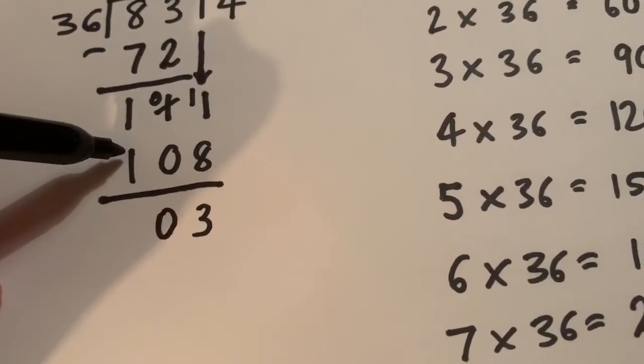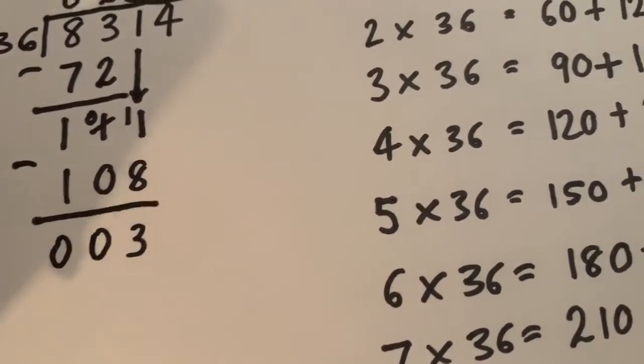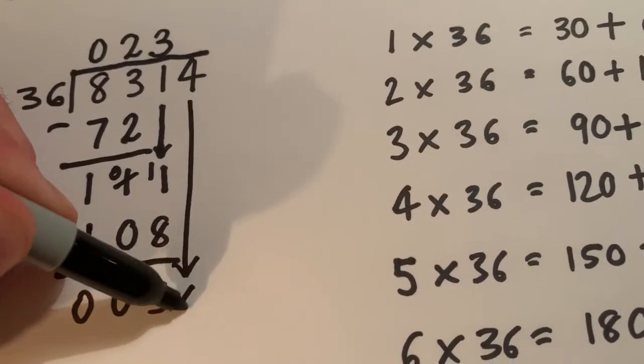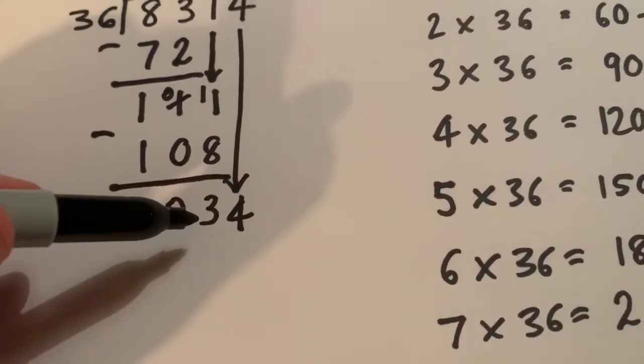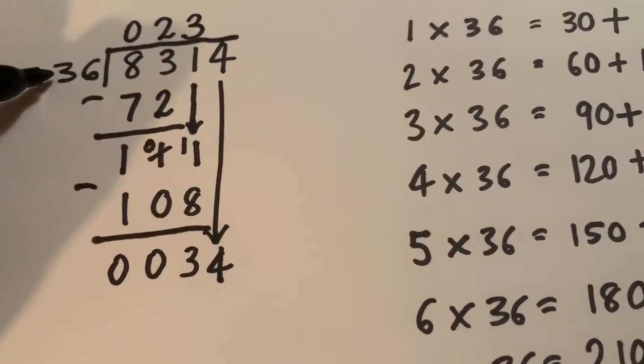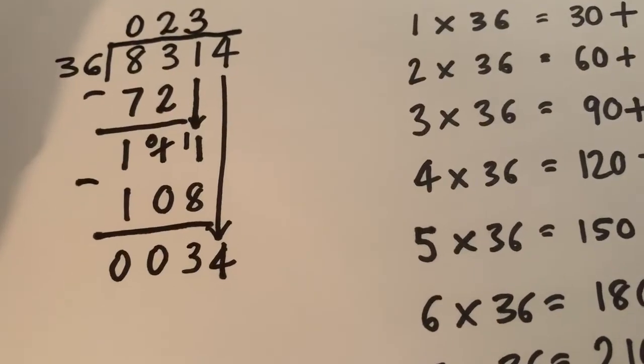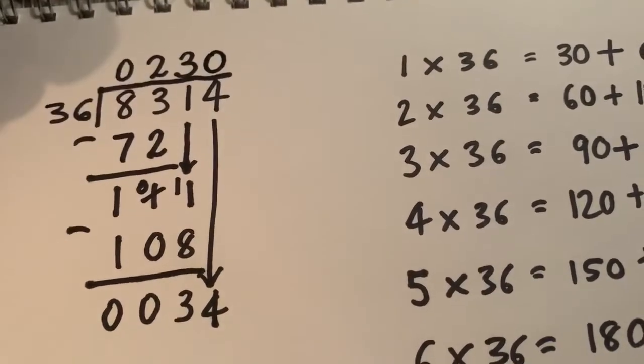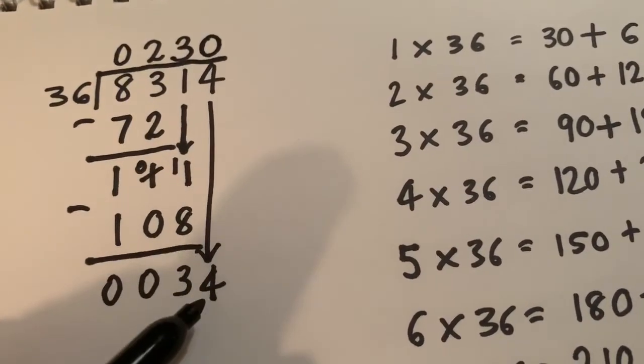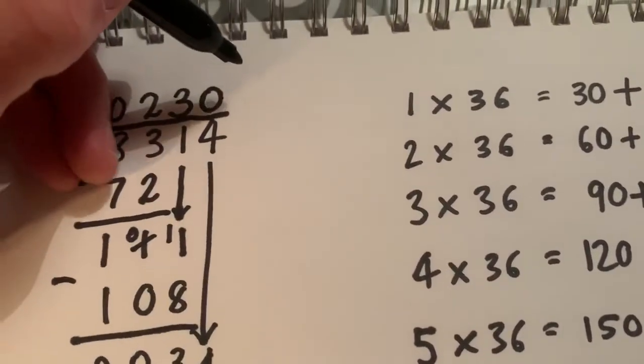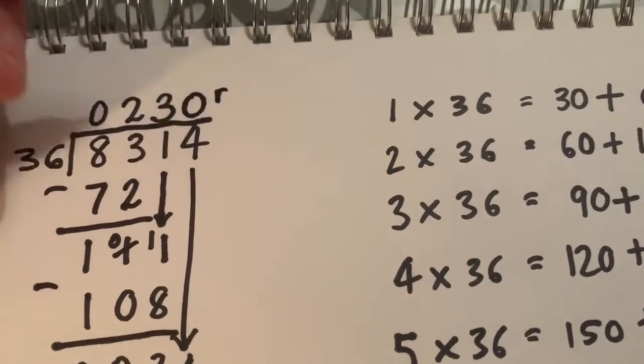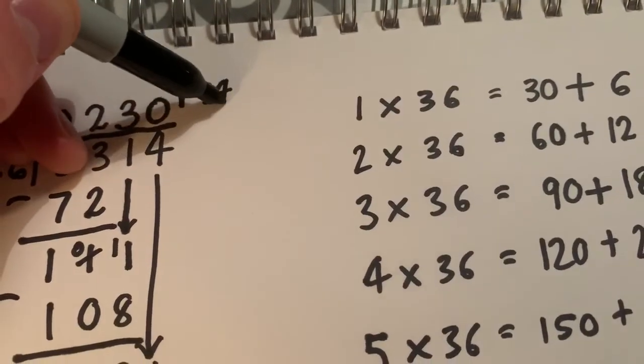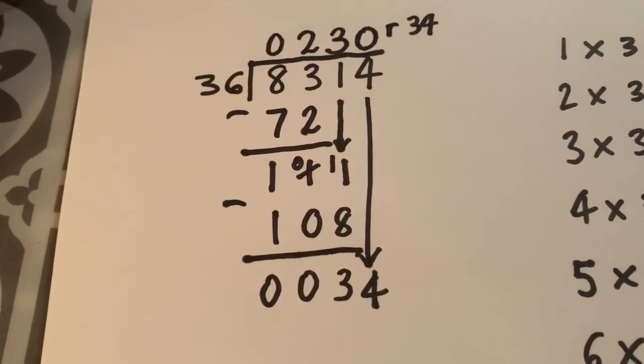11 take away 8 is 3, 0 take away 0 is 0, 1 take away 1 is 0. I'm left with 3. Now I need to bring down my last digit. Bring the 4 down, gives me 34. How many 36s into 34? Well, I can't fit 36 into 34. So I'm going to have a 0 here, which means that the 34 is left over. This is our remainder. So just like in short division, I'm going to write an R for remainder and record my answer like that.